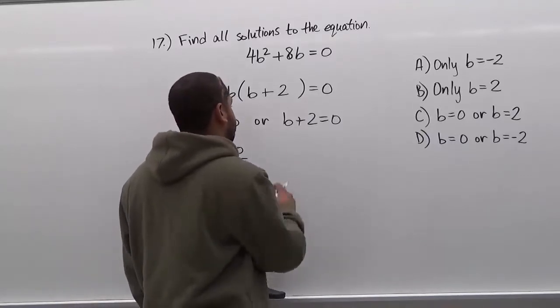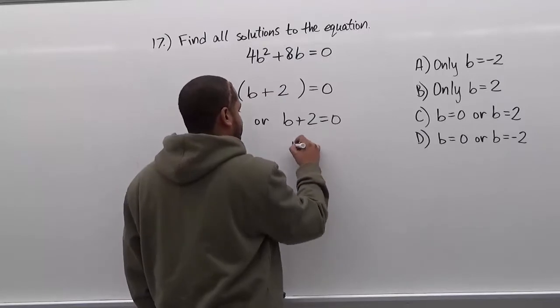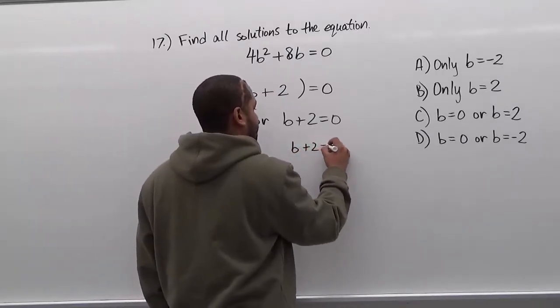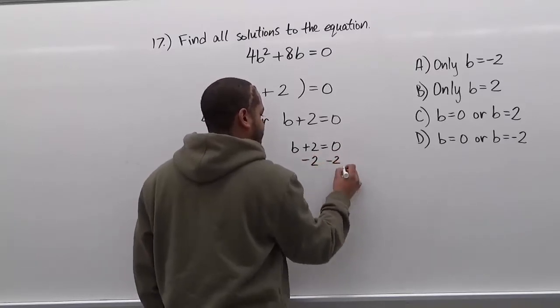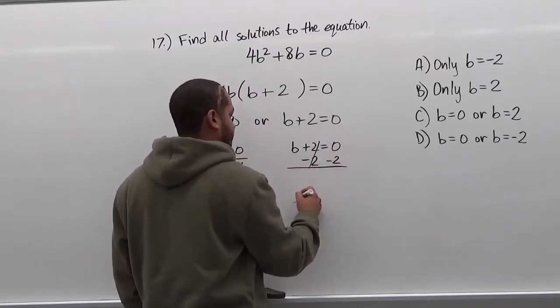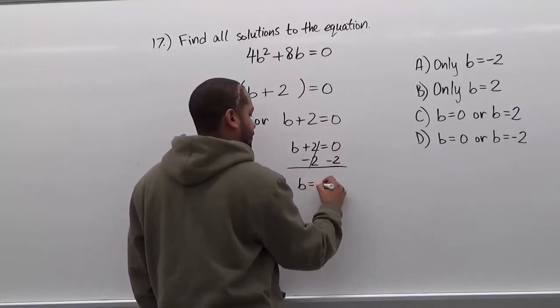Our second solution here is b plus 2 equals zero. So we're going to use the additive inverse to move the plus 2 over. So we're going to subtract 2 from both sides. These two will cancel out and we get b is equivalent to negative 2.